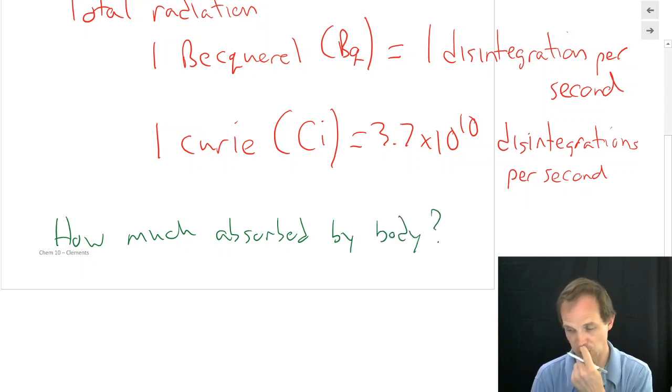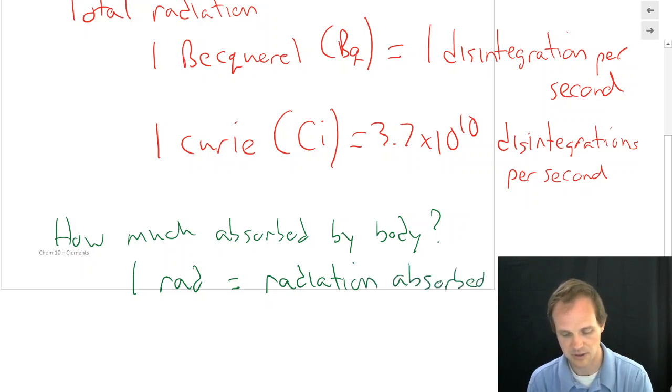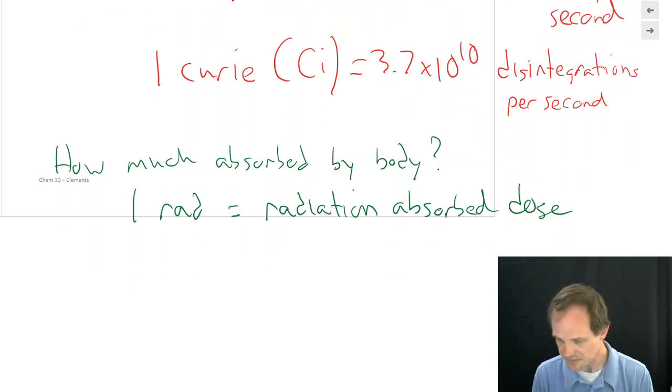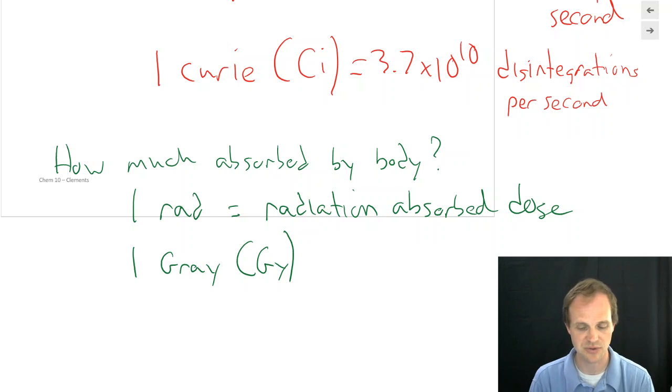So those are ways of measuring total radiation coming off, a Becquerel and a Curie. But what if you want to know how much was absorbed by the body? How much that radiation was absorbed by the body? Then you might need to use a unit called the RAD, which stands for Radiation Absorbed Dose. And we're not going to go into detail, but it's basically related to the amount of energy that your body absorbs per gram of material. It's not commonly used, because there's another one that we use a lot more commonly. But you also might run across a gray, abbreviated GY, which is related to the RAD and is also related to a kilogram of body tissue as opposed to a gram of body tissue. But again, these aren't as commonly used because what people usually care about is what is it going to do to me?